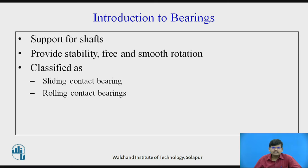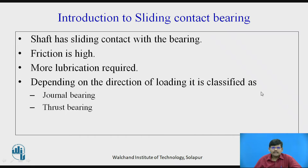Bearings are classified as sliding contact bearings and rolling contact bearings. In sliding contact bearings, the shaft has a sliding contact with the bearing, so friction is quite high and more lubrication is required. Depending upon the direction of load, they are classified as journal bearings and thrust bearings. Sliding contact bearings prefer high lubrication as high friction is involved.